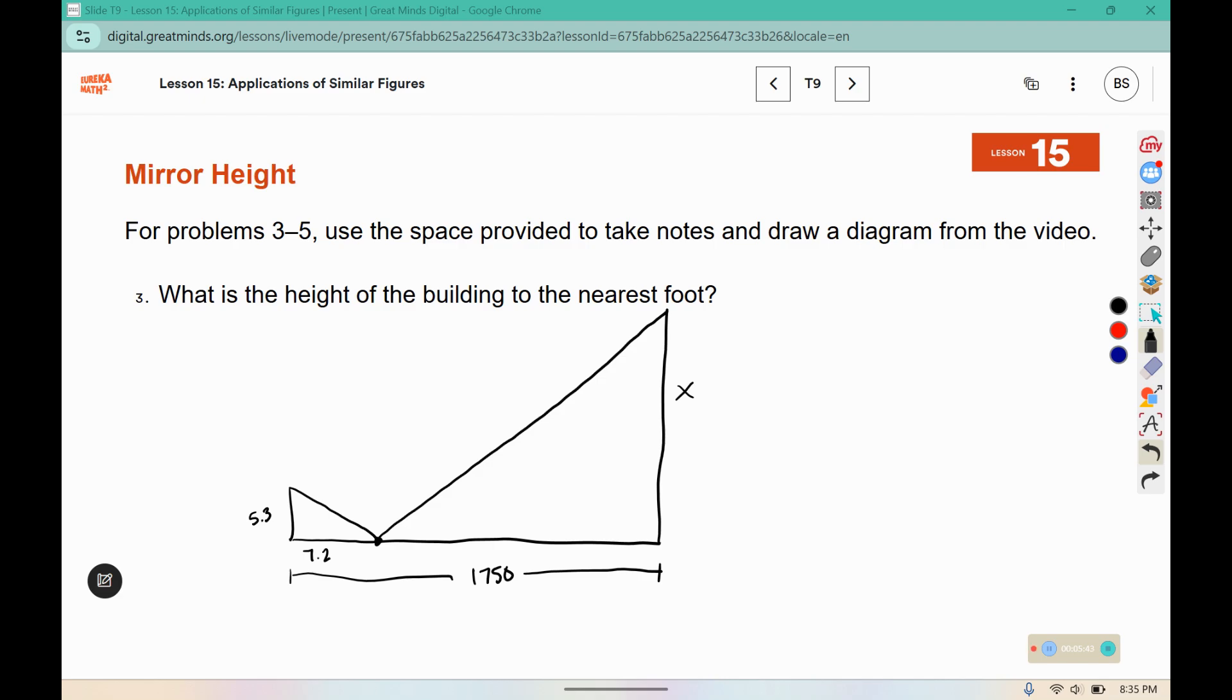So I have the measurements written down here in the little diagrams. We know that these triangles are similar because they both have right angles, the child is standing straight up, and the building is standing straight off of the ground as well, and the mirror reflects the same angle that you see into it coming out of it. So by AA criterion, these are similar.